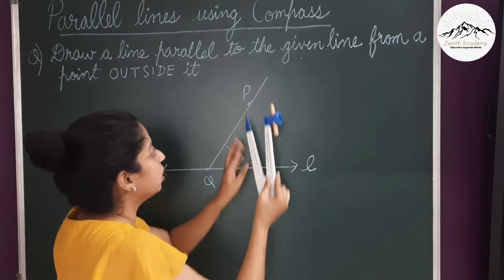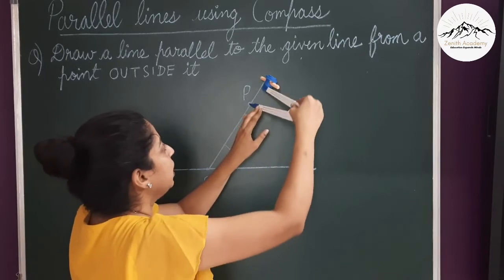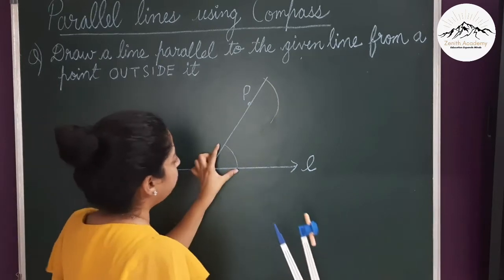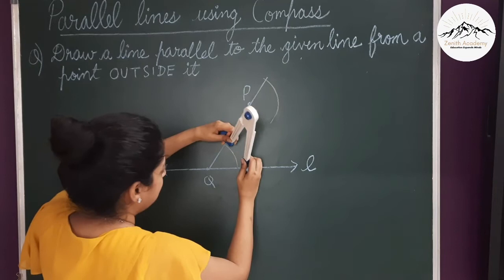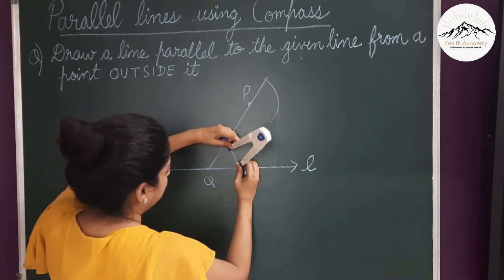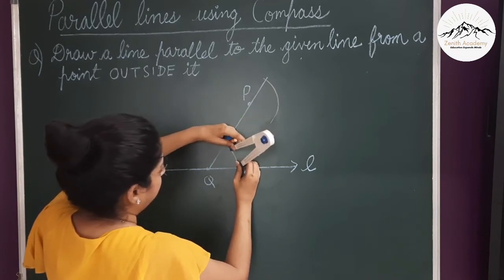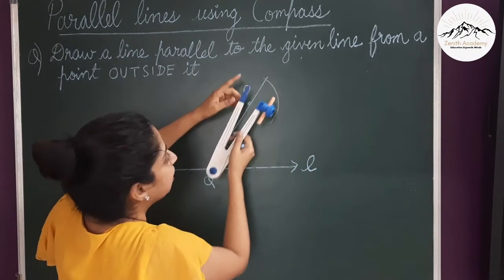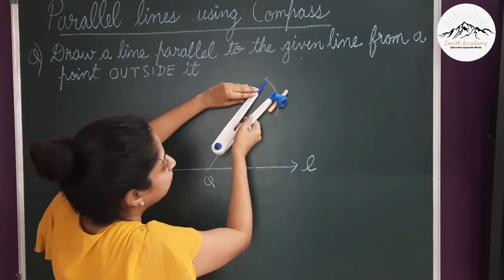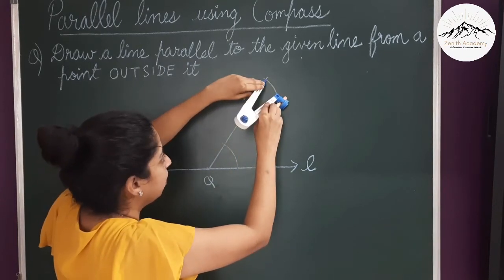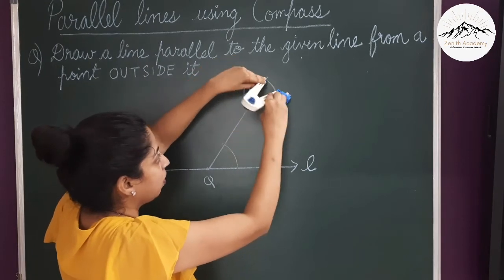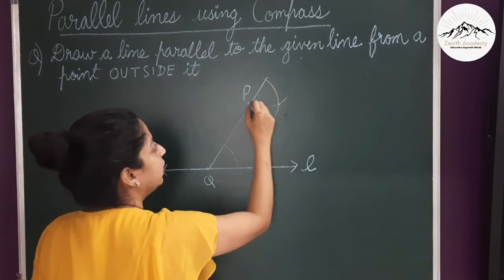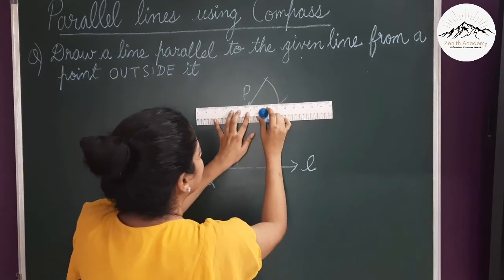Now taking the same compass measure, keep the pointer at P and draw an arc. Now measure the first arc. Open the compass to that measure, then keep the pointer on the arc at P and make a cut on the previous arc. You can see the cut here. Now simply join this intersection point and point P to obtain a parallel line.